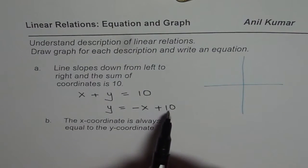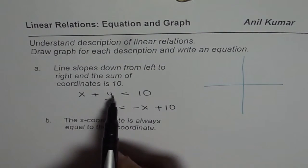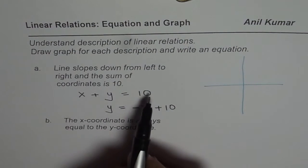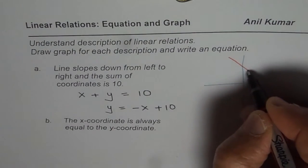So here, 10 will be your y-intercept. And what is going to be the x-intercept? Well, we can find from here. If I use y as 0, x is 10. That means we are talking about a line which is kind of like this.